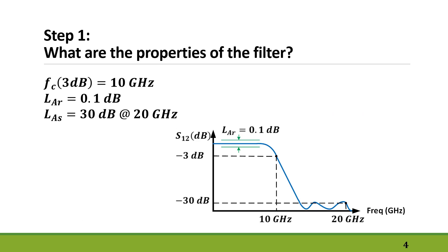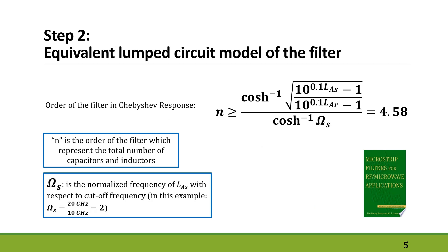For step one, let's consider a low-pass filter with a cutoff frequency of 10 GHz. Cutoff frequency is normally defined when S12 of the filter drops by 3 dB. We also want a filter with low ripple in its passband, so 0.1 dB is a good number for that purpose. The last piece of information we need is attenuation at the stopband — let's say 30 dB attenuation at 20 GHz.